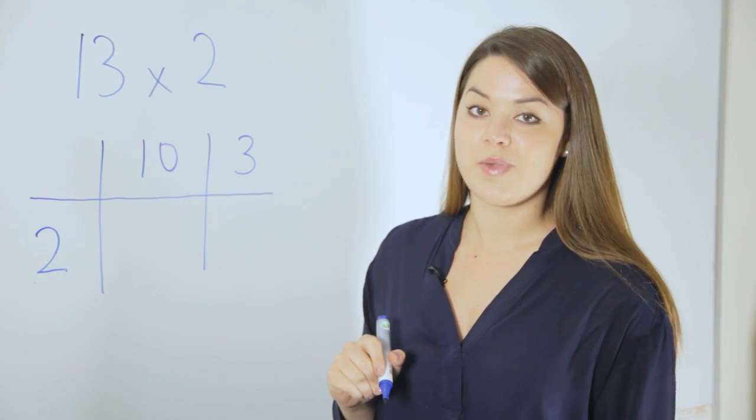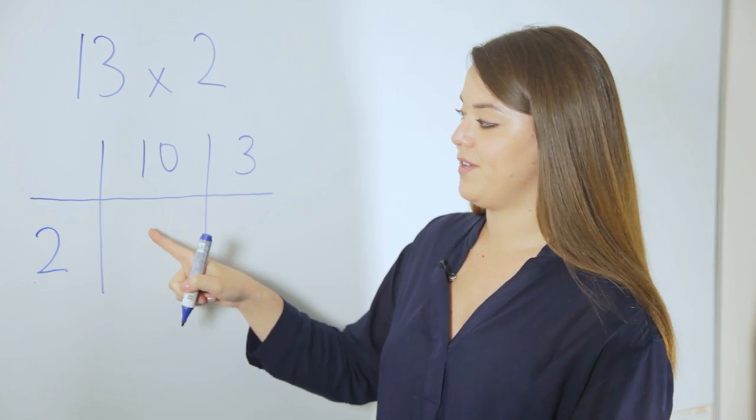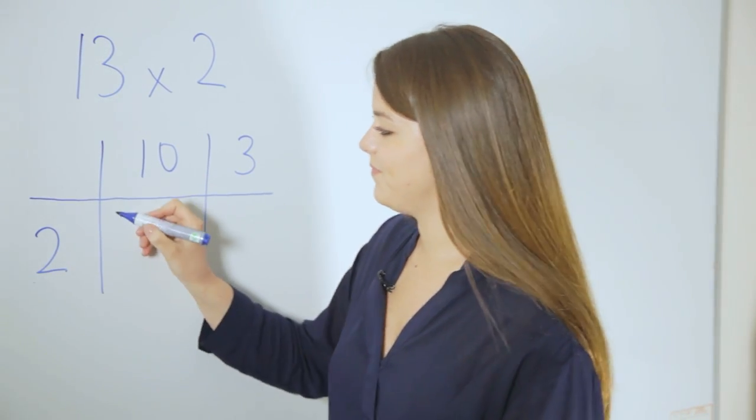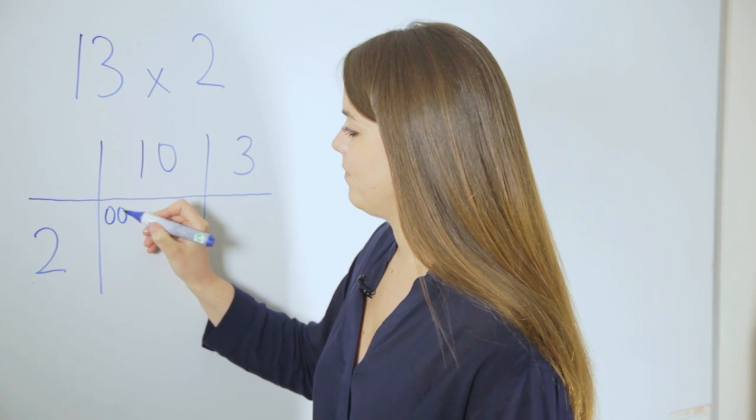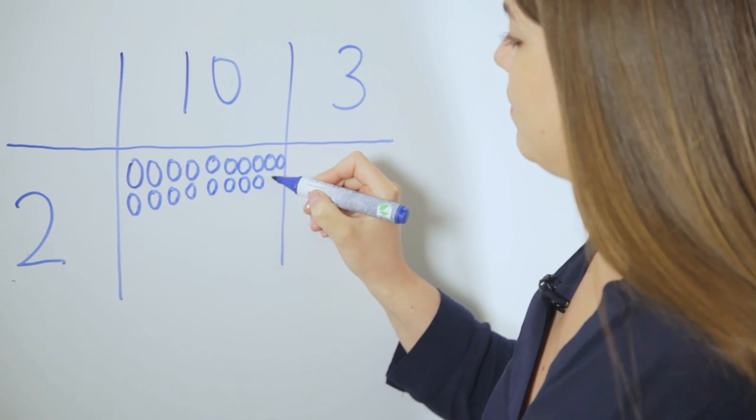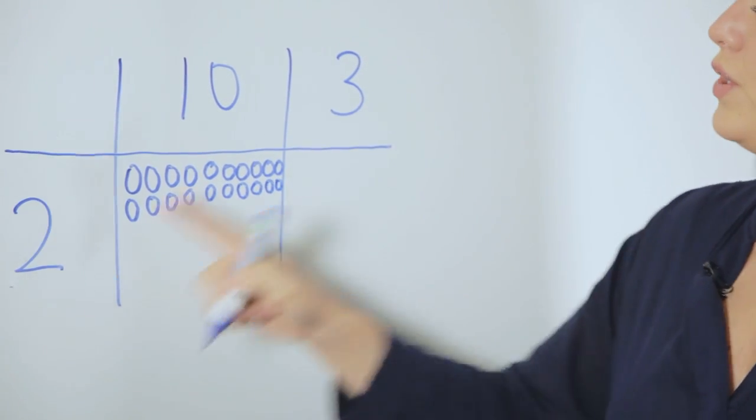We're now going to use our knowledge of arrays from key stage 1 and put an array into the grid method. We're going to use 2 lots of 10 and then we're going to do 2 lots of 3.